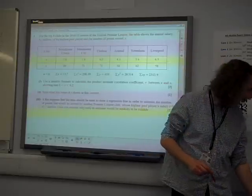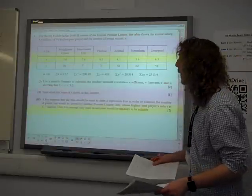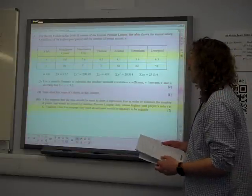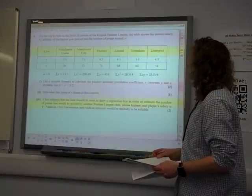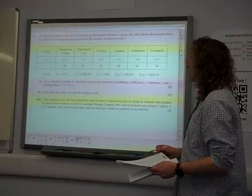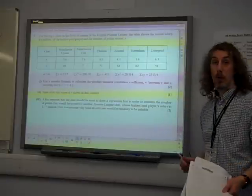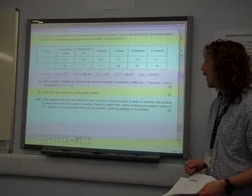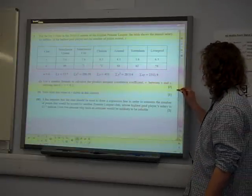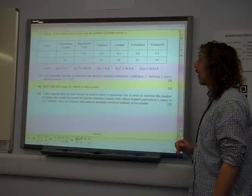So question one we had here. Six clubs in the 2010-2011 season of the Premier League. Annual salary of the highest paid player and the number of points scored by the team. Use a suitable formula to calculate the product moment correlation coefficient R between X and Y.